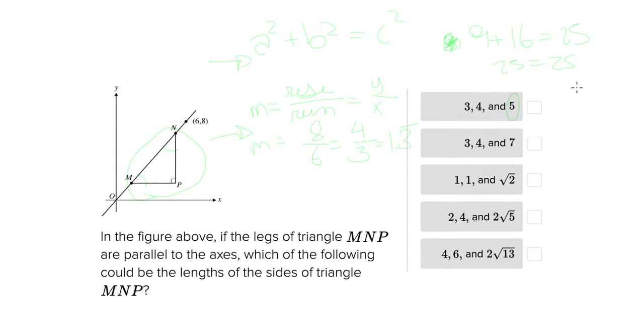Now for the slope, the rise over run, we're not told which leg this is, so this could potentially be 3 fourths but it could also be 4 thirds. And since we are asked which could be the length of the sides of the triangle, this is a possibility. So this is actually the answer, but we're gonna go ahead and check out the rest of them to show you why these don't work.